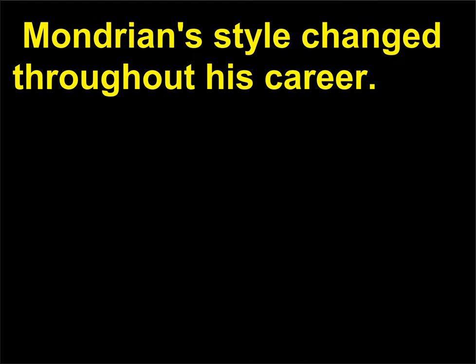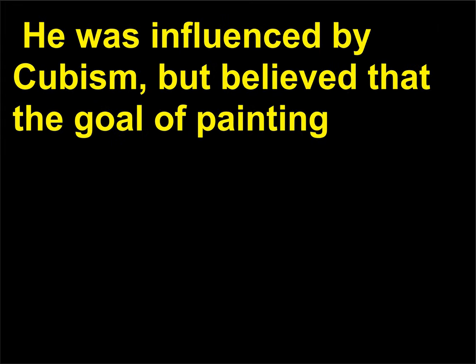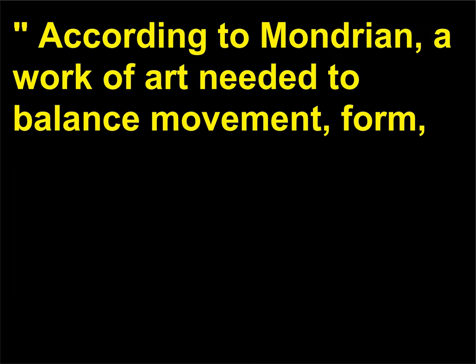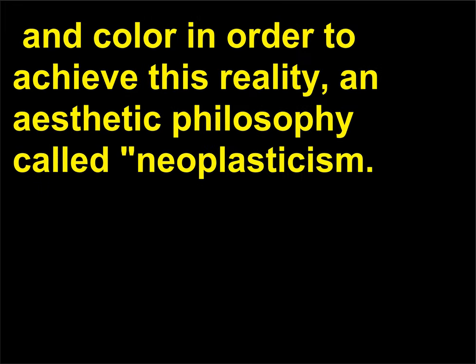Mondrian was influenced by Cubism but believed that the goal of painting should be complete abstraction as a vehicle for communicating reality. He supported the idea that color and form could impose pure reality on the viewer in what he called 'plastic expression.' According to Mondrian, a work of art needed to balance movement, form, and color in order to achieve this reality — an aesthetic philosophy called Neoplasticism.